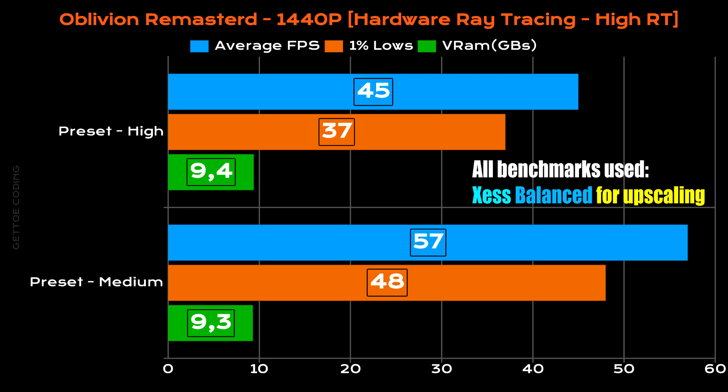For the medium graphics preset at 1440p with hardware ray tracing high, the B580 managed an average FPS of 57, with 1% lows coming in at 48 — a decent increase compared to the high graphics preset. As far as VRAM usage, not much of a difference: 9.4 gigs at high versus 9.3 gigs at medium.